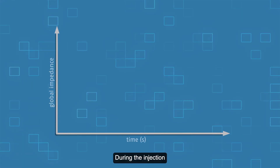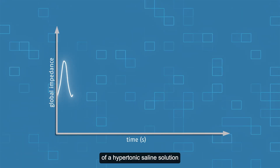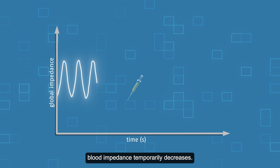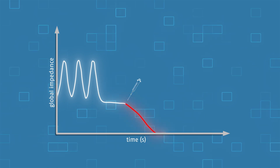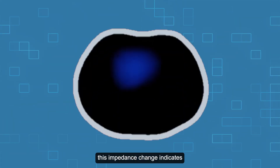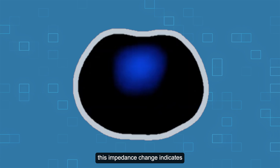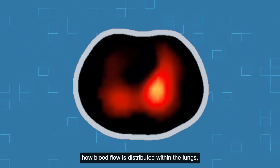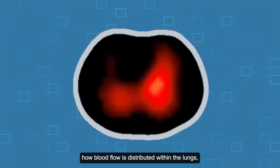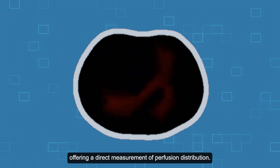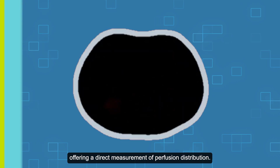During the injection of a hypertonic saline solution, blood impedance temporarily decreases. Detected by TMPL 2100, this impedance change indicates how blood flow is distributed within the lungs, offering a direct measurement of perfusion distribution.